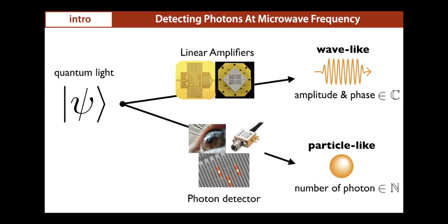On one side we have linear amplifiers. In the microwave domain these are LC circuits with SQUIDs. Linear amplifiers are going to detect a quadrature of the quantum light. The result associated with this quadrature gives an amplitude and a phase — a complex number. This complex number is associated with the wave-like character of the light.